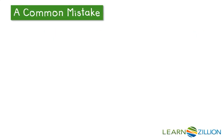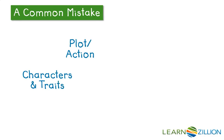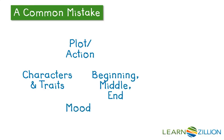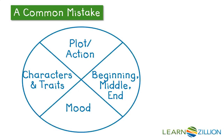Now, a common mistake when trying to figure out the theme of a poem is to keep everything you've learned about the poem in separate compartments of your mind. So far, we've looked at this poem's plot and actions. We've looked at the characters and their traits. We've examined the beginning, middle, and end. And we've looked at the mood. Now, each one of these elements is important on its own. But finding the theme requires you to put all of these elements together, since the theme or message involves the poem as one whole.